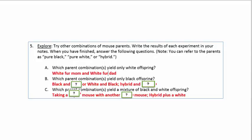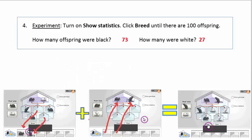And C is which parent combination will yield a mixture of white and black? Now remember back to when we did the holding cage and which one yielded black and white offspring? Here's a little clue. Take a look at the picture.